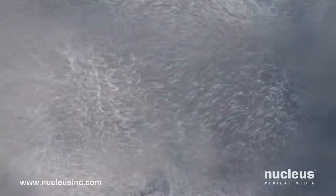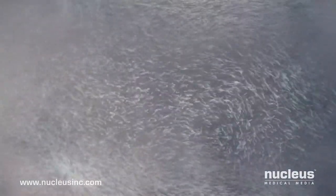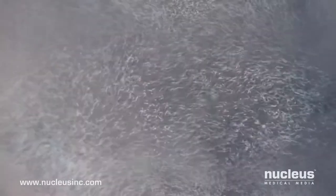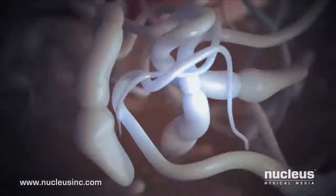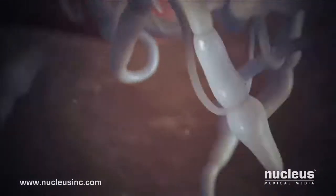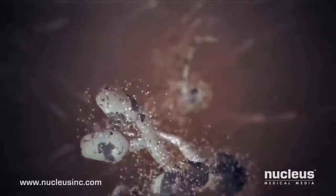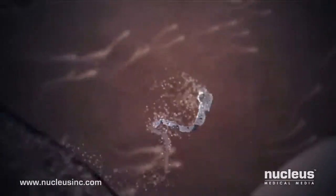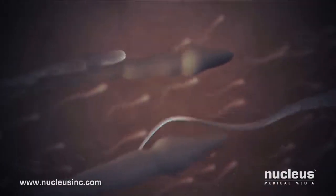During sexual intercourse, about 300 million sperm enter the vagina. Soon afterward, millions of them will either flow out of the vagina or die in its acidic environment. However, many survive because of the protective elements provided in the fluid surrounding them.